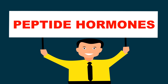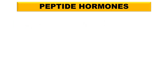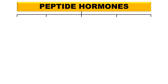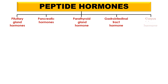Now let's move to the peptide hormones. These five glands have hormones that are peptide in nature: the pituitary gland, pancreatic hormones, parathyroid, gastrointestinal hormones, and corpus luteum hormones. So hormones of these glands are peptide in nature.